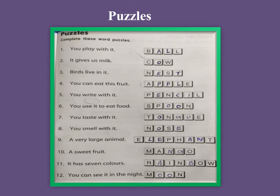Number five: you write with it. You can see P, N, and L are given, so the answer is pencil. Number six: you use it to eat food — spoon. Number seven: you taste with it — tongue, T-O-N-G-U-E. Number eight: you smell with it — with our nose, N-O-S-E.